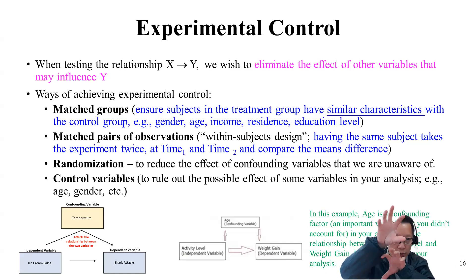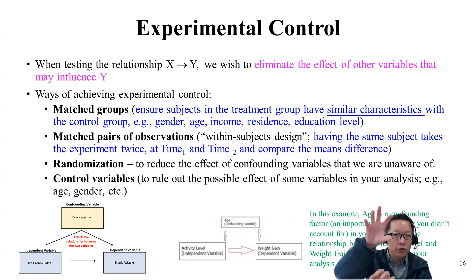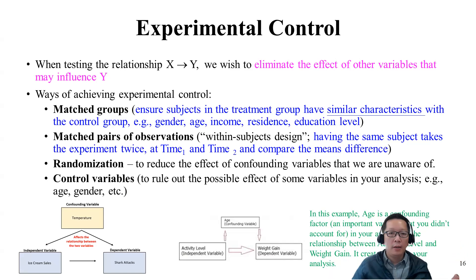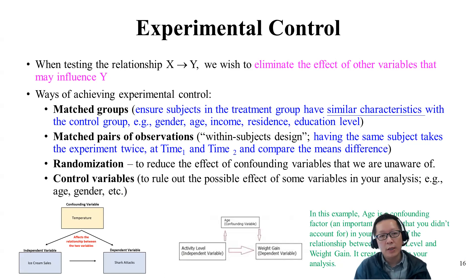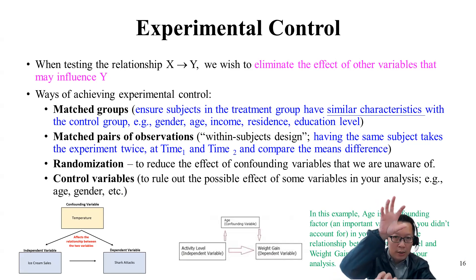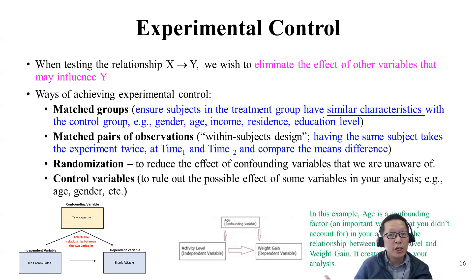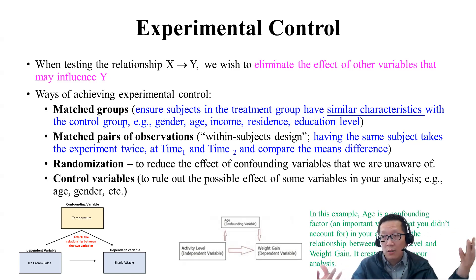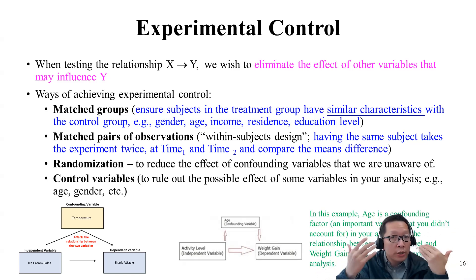If you can ensure that the people randomized into the treatment group versus the control group are as matched or as similar as possible, that reduces external variation or external factors that could change the result in Y beyond what you can control. If you can ensure matched groups, you have more control over your experimental results.